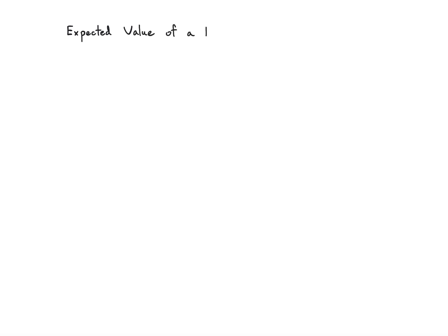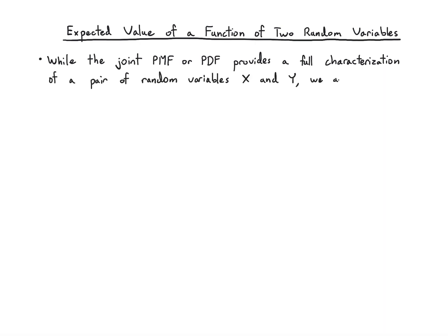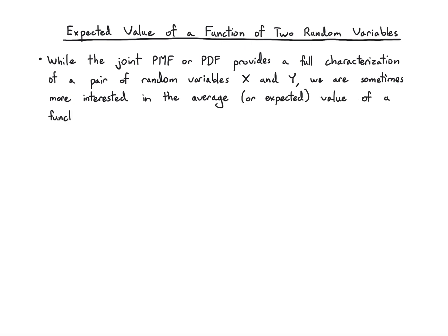Let's talk about how to take the average of two random variables. The first thing we need to remember is that if we just want a single average, we're really talking about a function of two random variables that we're trying to average. So with the joint PMF or joint PDF, we have a full characterization of a pair of random variables — we know how likely it is that they take a certain pair of values together, but we might just want to know how they behave on average. So we might select some function and want to know the average value of that function with respect to the PMF or PDF.